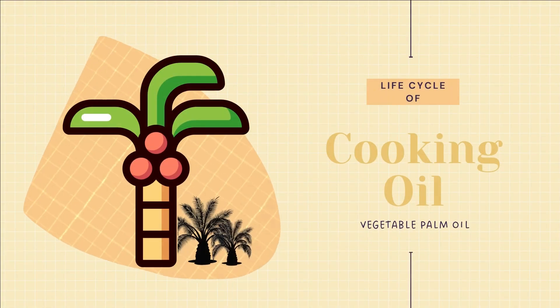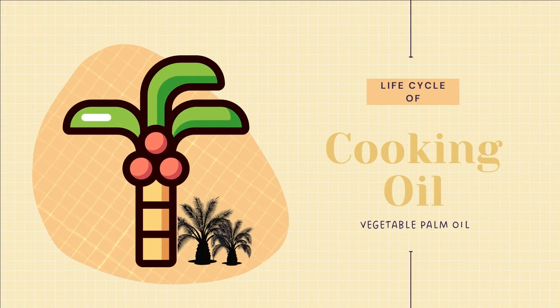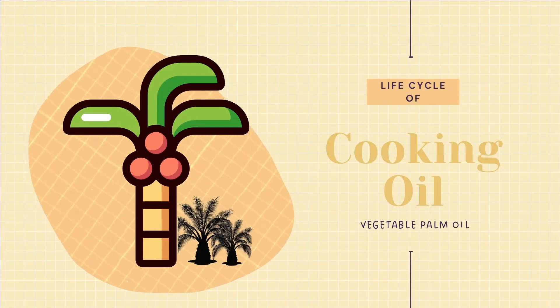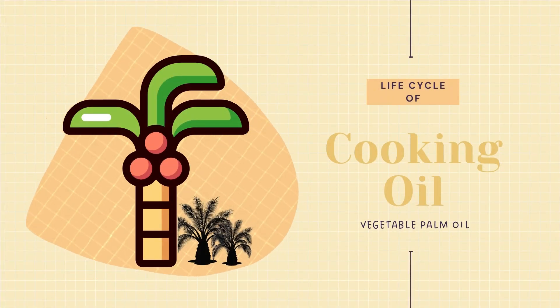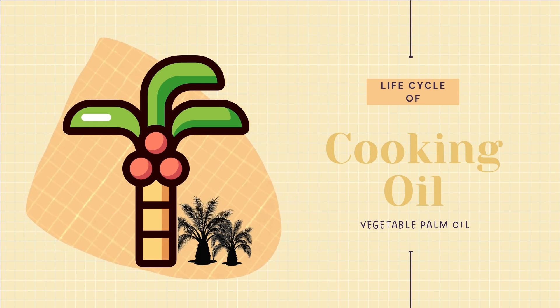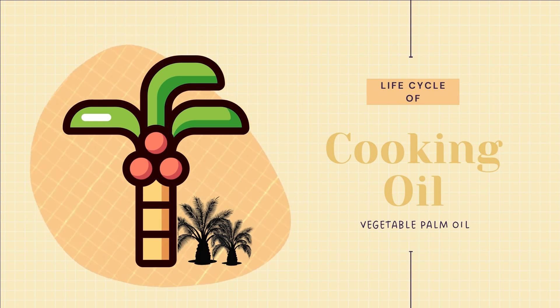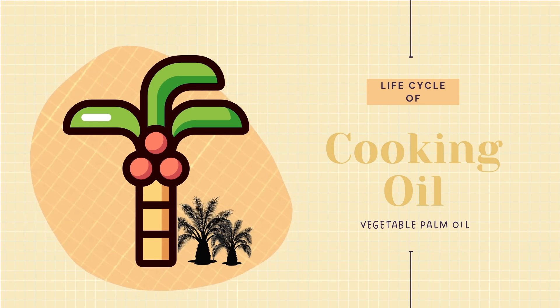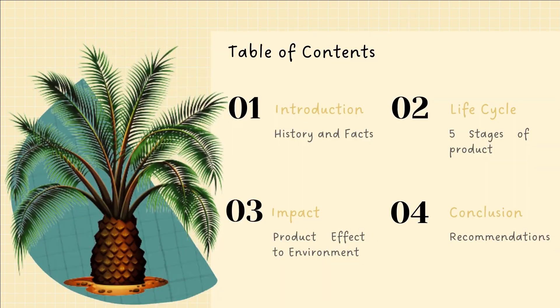Hello and hi everyone. Today, I'll share about the life cycle of cooking oil, which is vegetable palm oil that is extensively used in Malaysia. Let's keep an eye out.